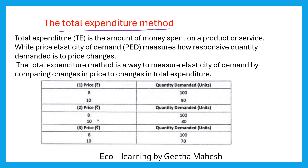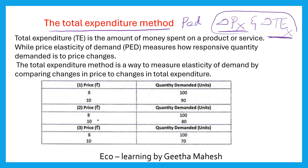This total expenditure method helps us to find the price elasticity of demand by comparing the relationship between change in price of X and the change in total expenditure on X commodity. Due to change in the price of X, the total expenditure on X commodity also changes. By keeping these two variables' relationship, we are going to understand what type of elasticity of demand exists.